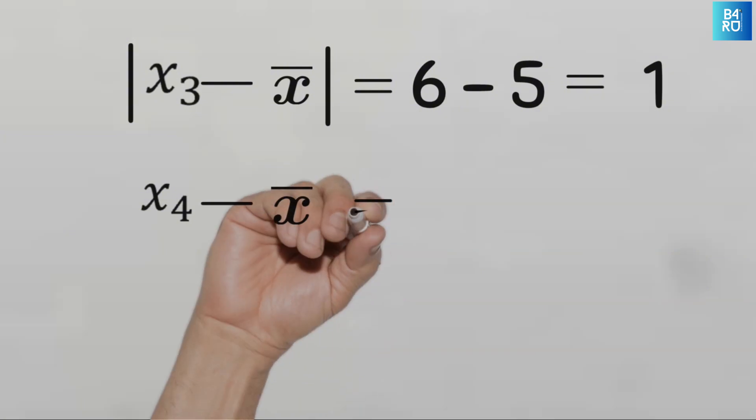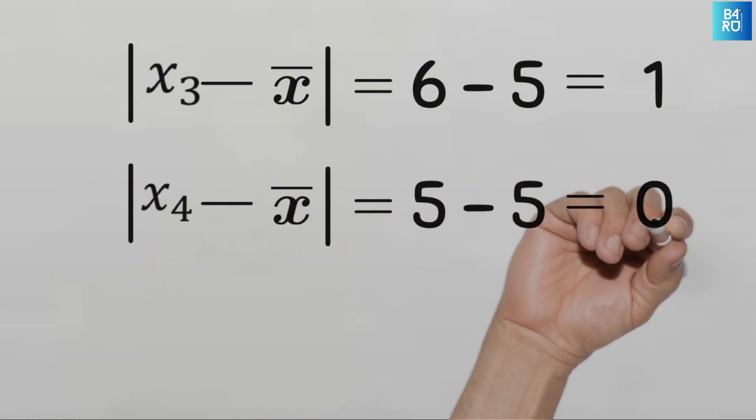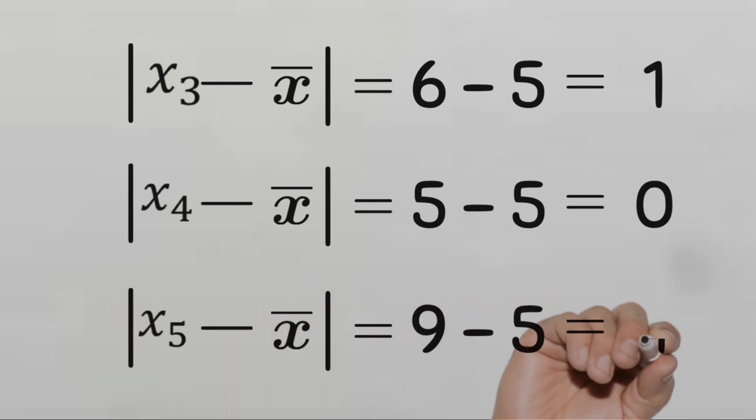And for x4, we'll have 5 minus 5, and that will be 0, with an absolute value equal to 0. And lastly for x5, we will have 9 minus 5, with an absolute value of 4.